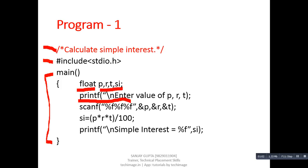Next is printf. printf is a predefined function which displays values on the console, so this printf is showing 'enter value of P, R, and T' on the console. Next is scanf. scanf is also a predefined function which reads values from the console. Inside scanf, three %f format specifiers are written — %f is known as a format specifier.